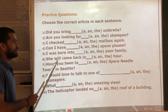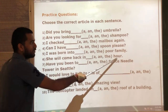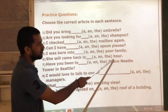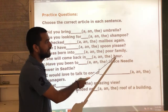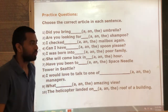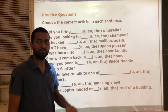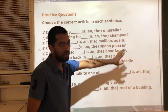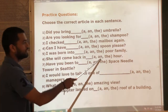Next: 'She will come back in ___ hour.' Even though H is a consonant, it is silent here — the word is read with a vowel sound: hour. So 'an' is used. She will come back in an hour.